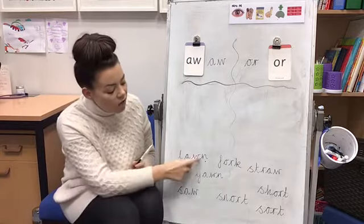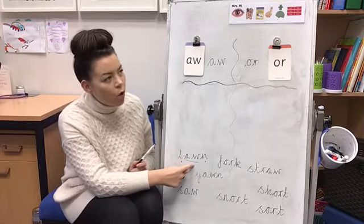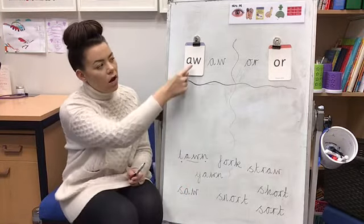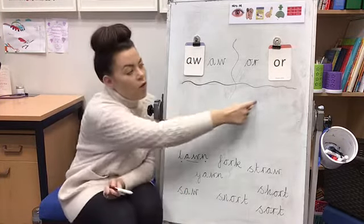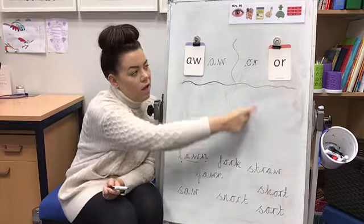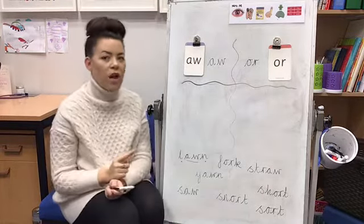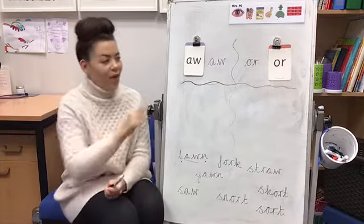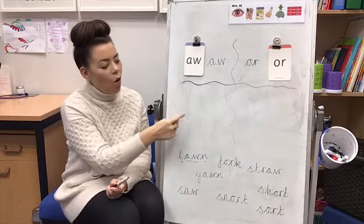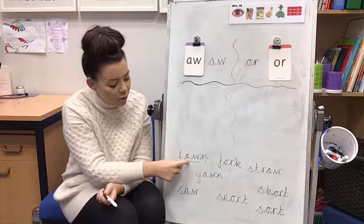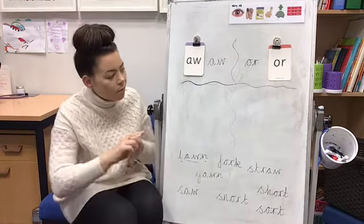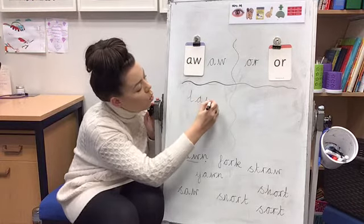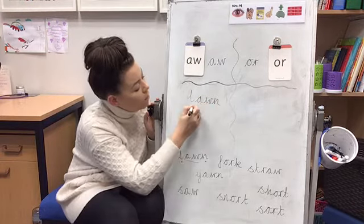Now these special friends in the middle are an a and a w. So do you think it goes on this side, yawn at dawn, or do you think it goes on this side for or shut the door? Which side do you think? Yes, it goes on yawn at dawn because the special friends are an a and a w. So we'd write it here. L or n. Make sure your sound buttons are on there.